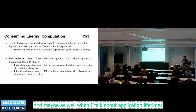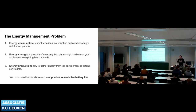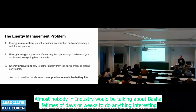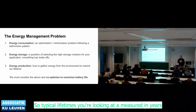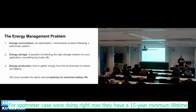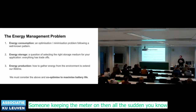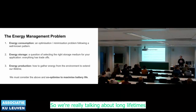Application lifetimes vary radically in industry. Almost nobody in industry would discuss battery lifetimes of days or weeks for anything interesting, because at that point you have a disposal or maintenance problem. Typical lifetimes are measured in years — for the smart meter case we're working on right now, they have a 15-year minimum lifetime. If there's a bug that keeps the meter on, a million meters potentially have to be visited. We're really talking about long lifetimes.